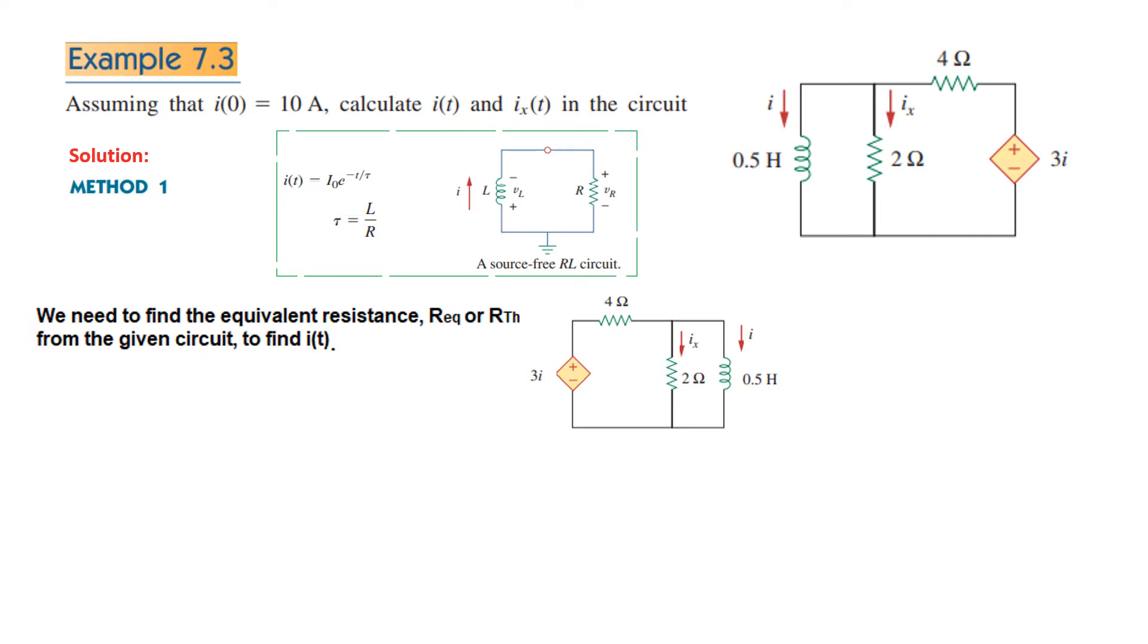Now to find Rth, we remove the load, which is the inductor in this case. Now the problem here is that we have a dependent source, and I hope you recall that for a dependent source we have to use either a test voltage source or a test current source.